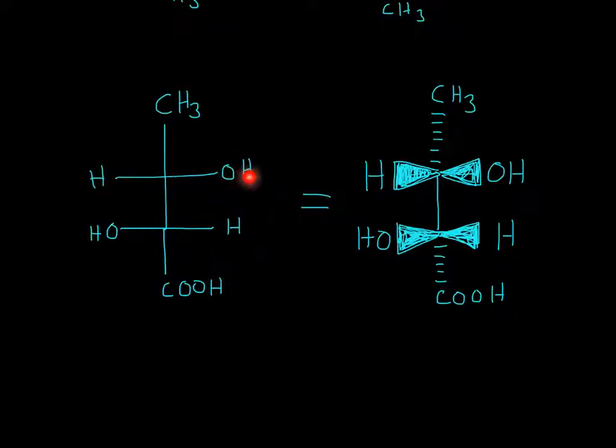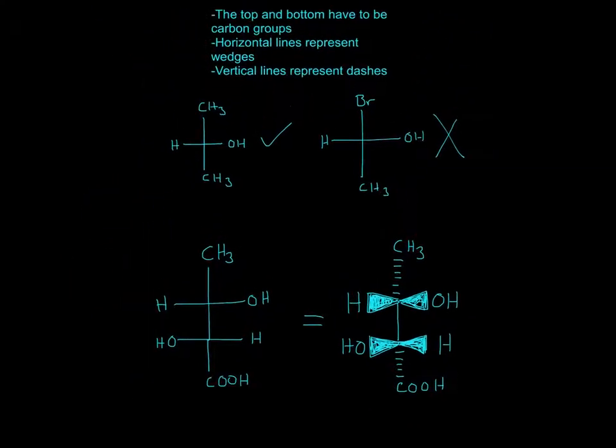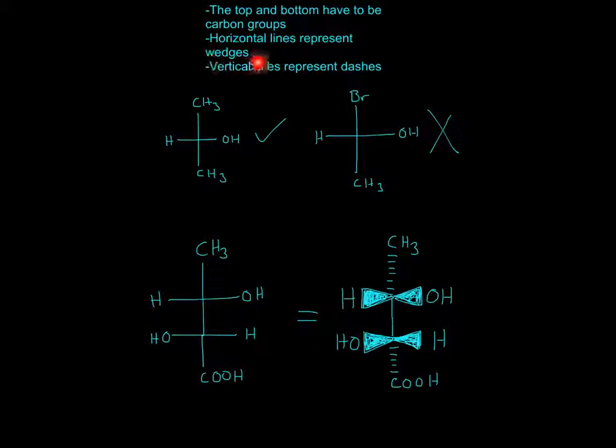So for here, horizontal lines represent wedges. They represent wedges, and wedges in organic chemistry mean that it's coming out of the page. So both of these are coming out of the page. The OH is coming out of the page, and the H is coming out of the page.